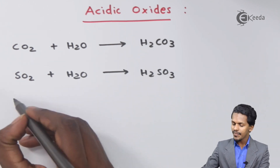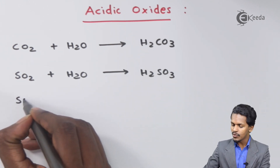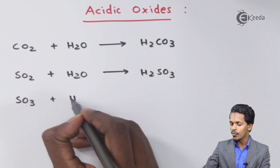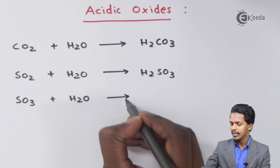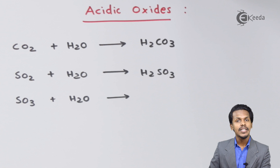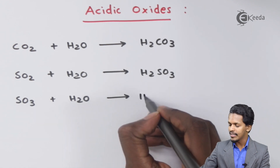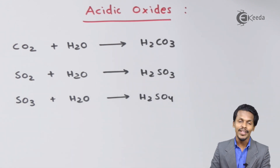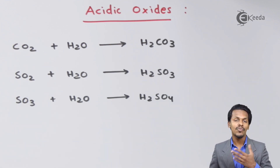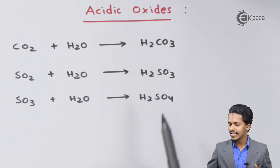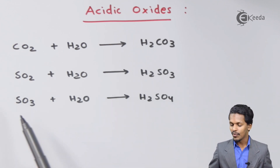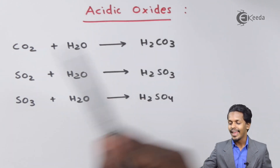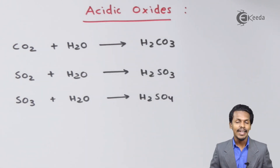Another example is sulfur trioxide (SO3). If SO3 is treated with water, the product we get is H2SO4, which is known as sulfuric acid — a common example we all know. Since it is acidic in nature, SO3 also falls under the category of acidic oxide.